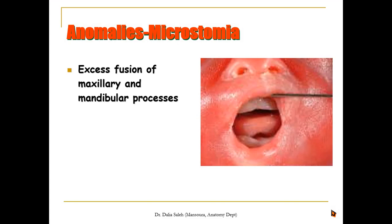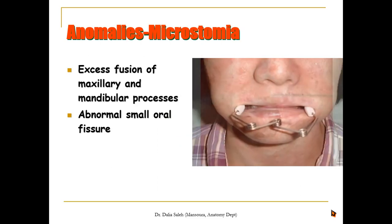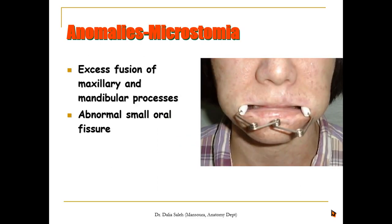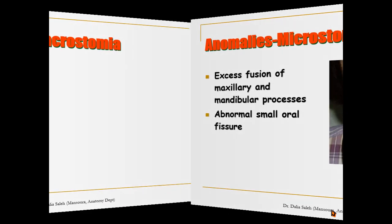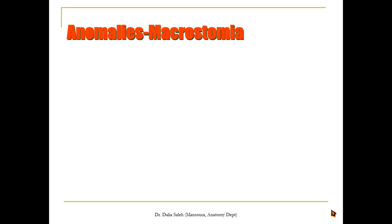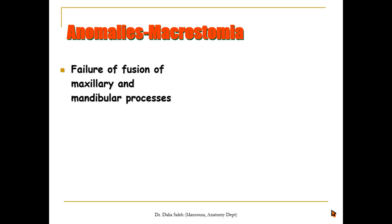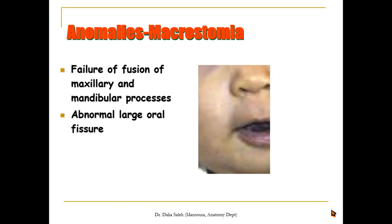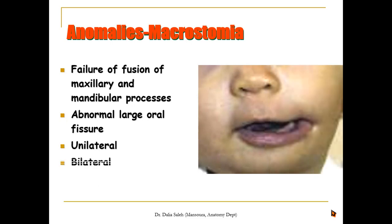If there is excess fusion of the maxillary and mandibular processes together, we end up with an abnormally small oral fissure — this anomaly is called microstomia. The opposite is called macrostomia, when there is failure of fusion of the maxillary and mandibular processes, resulting in an abnormally large oral fissure, which can be unilateral or bilateral.